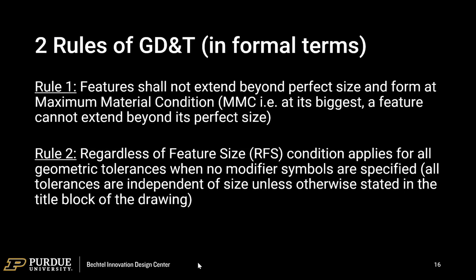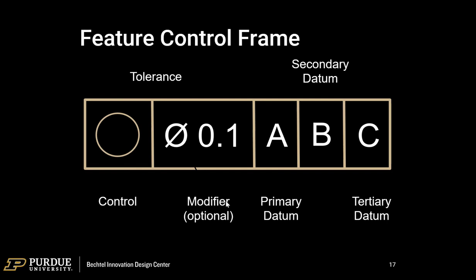GD&T runs on two fundamental rules. Rule one is that when you call out a feature size, it's presumed to be maximum and shouldn't be bigger than that. There is an LMC — least material condition — for holes and spaces that works as the functional sign inverse. Regardless of feature size is how we drop back to Cartesian classical coordinate tolerancing as a catch-all, so if rule one doesn't apply, rule two catches you.